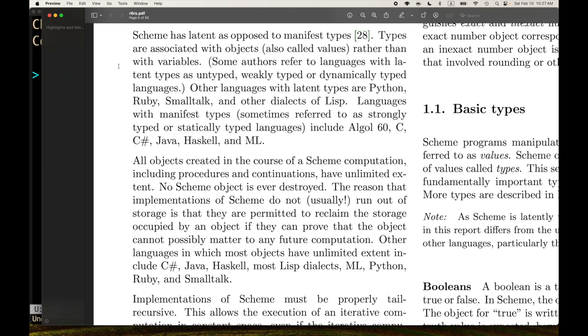Famously, Bob Harper has said that languages like Scheme aren't dynamic. He doesn't like the term dynamically typed. He would say Scheme is a strongly statically typed language that's unityped, where there's only one type, which is basically a giant union of all the possible types for all the values in the language. So that is the perspective of at least some people. So latent typing is the way the report calls it. Other languages with latent types are Python, Ruby, Smalltalk, and other dialects of Lisp. Languages with manifest types, sometimes referred to as strongly typed or statically typed languages, include ALGOL 60, C, C Sharp, Java, Haskell, and ML.